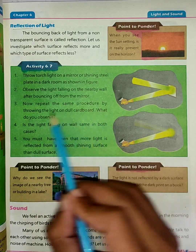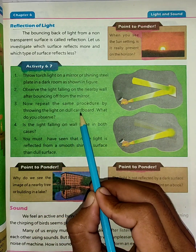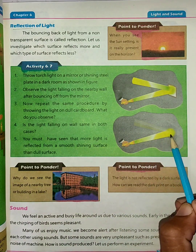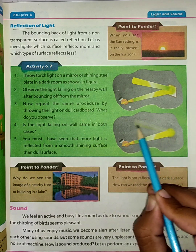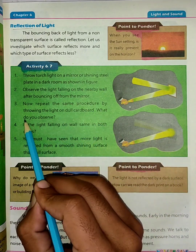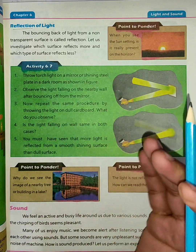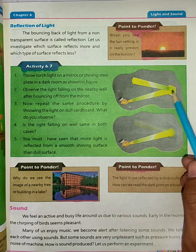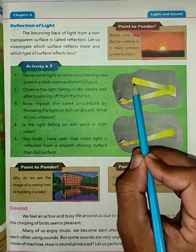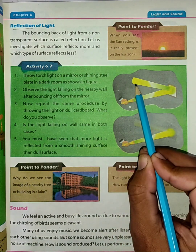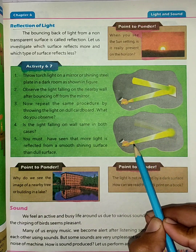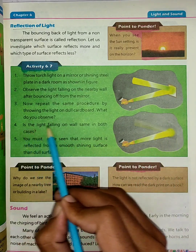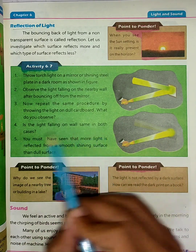Now repeat the same procedure by throwing the light on dull cardboard instead. What do you observe? Is the light falling on the wall the same in both cases?